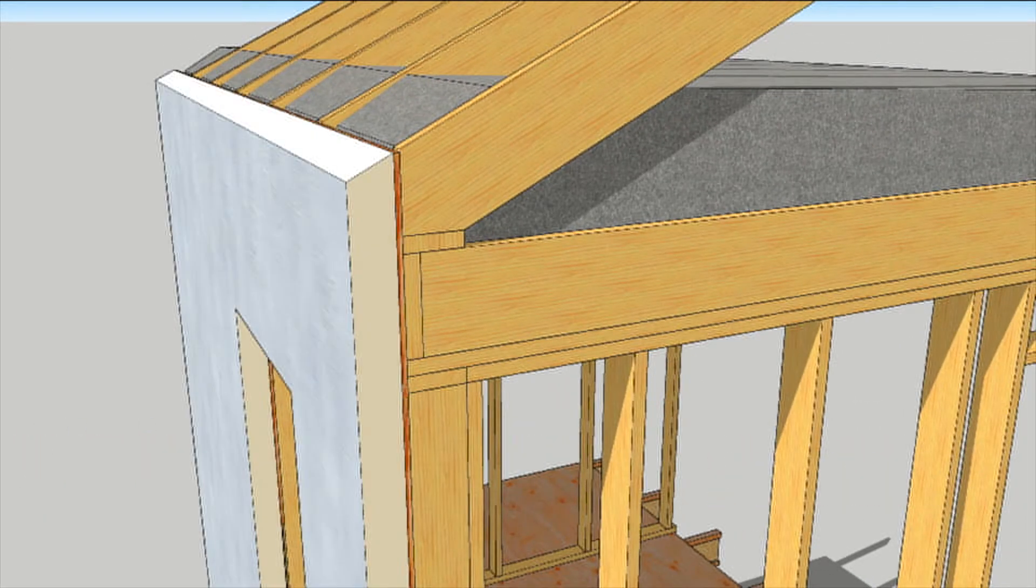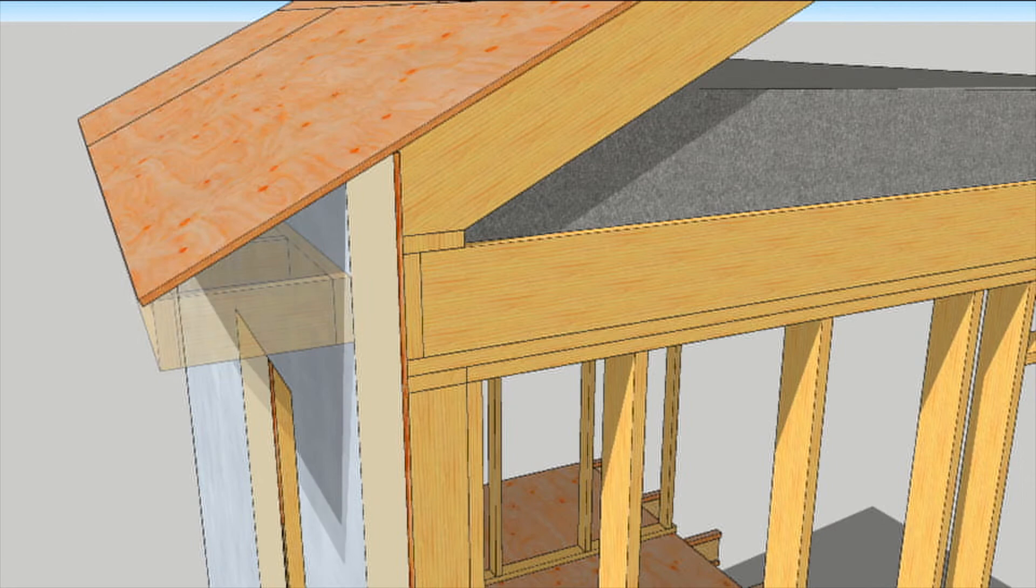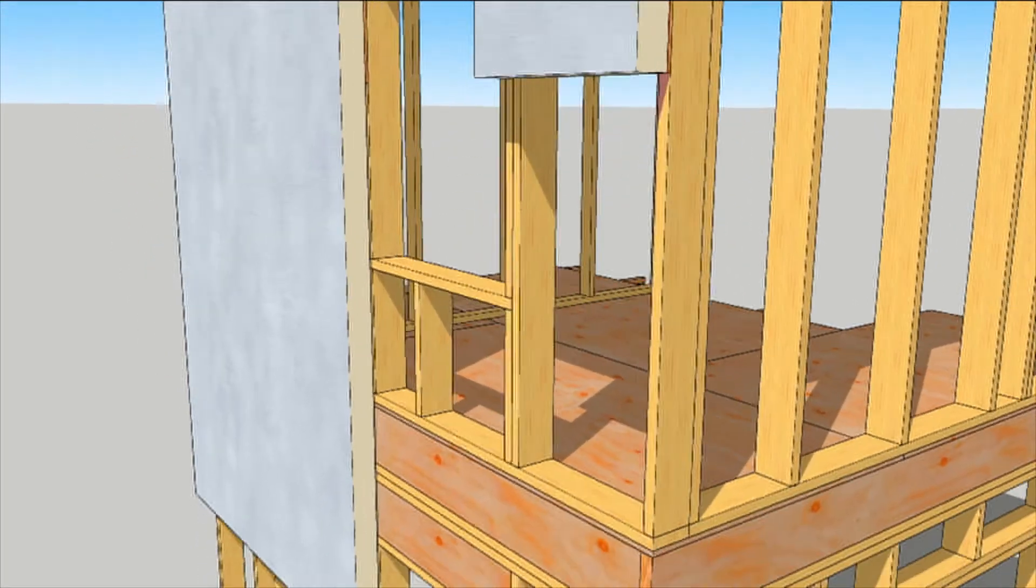If you're wrapping the outside with insulation, keep the rafters inside the envelope and then build a soffit after the fact.